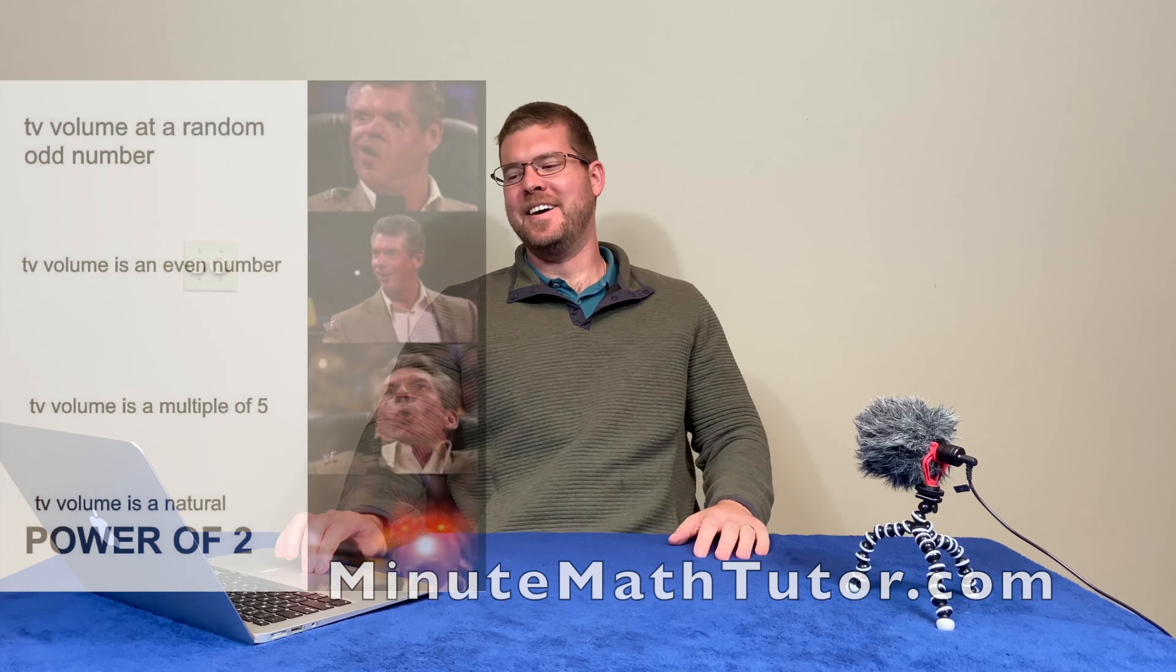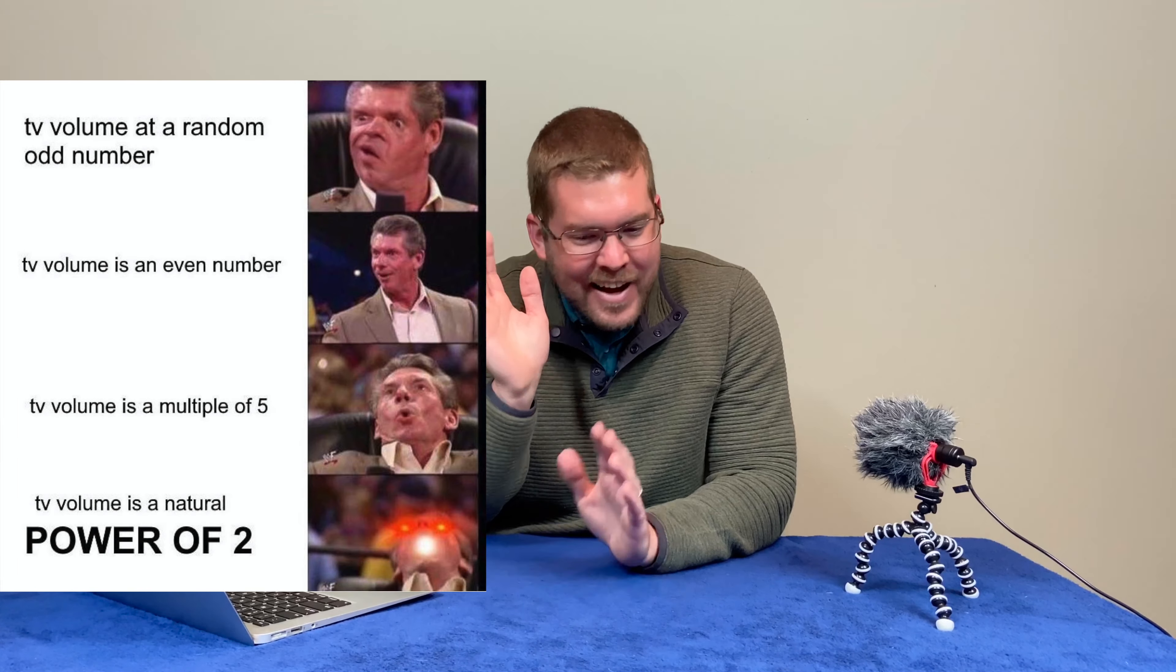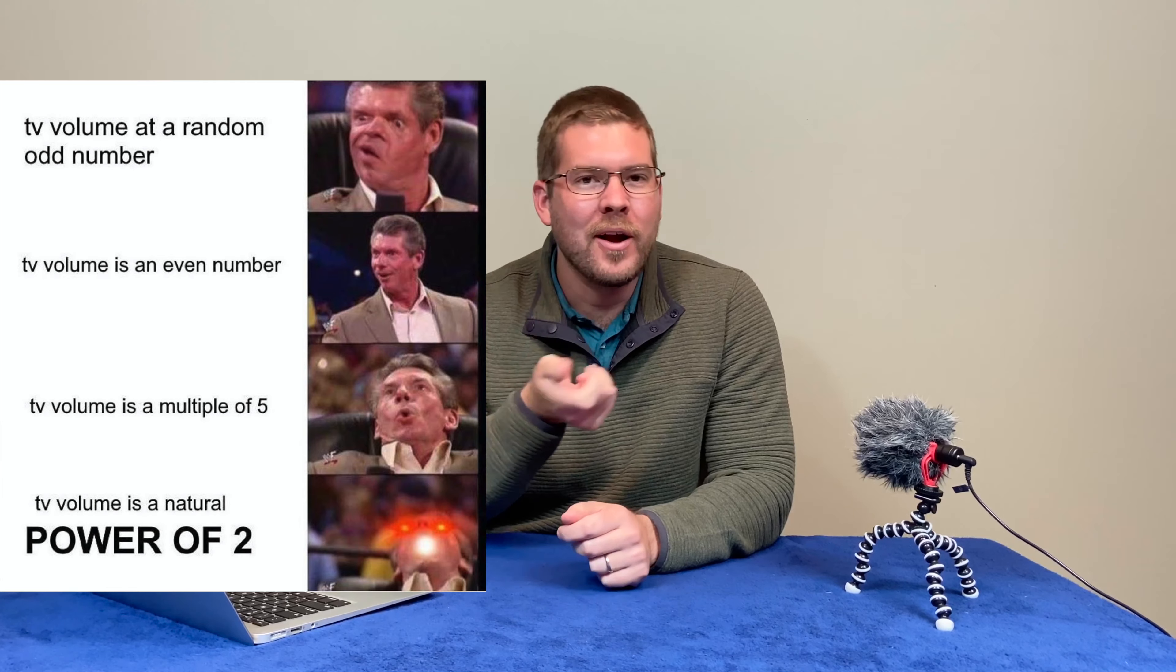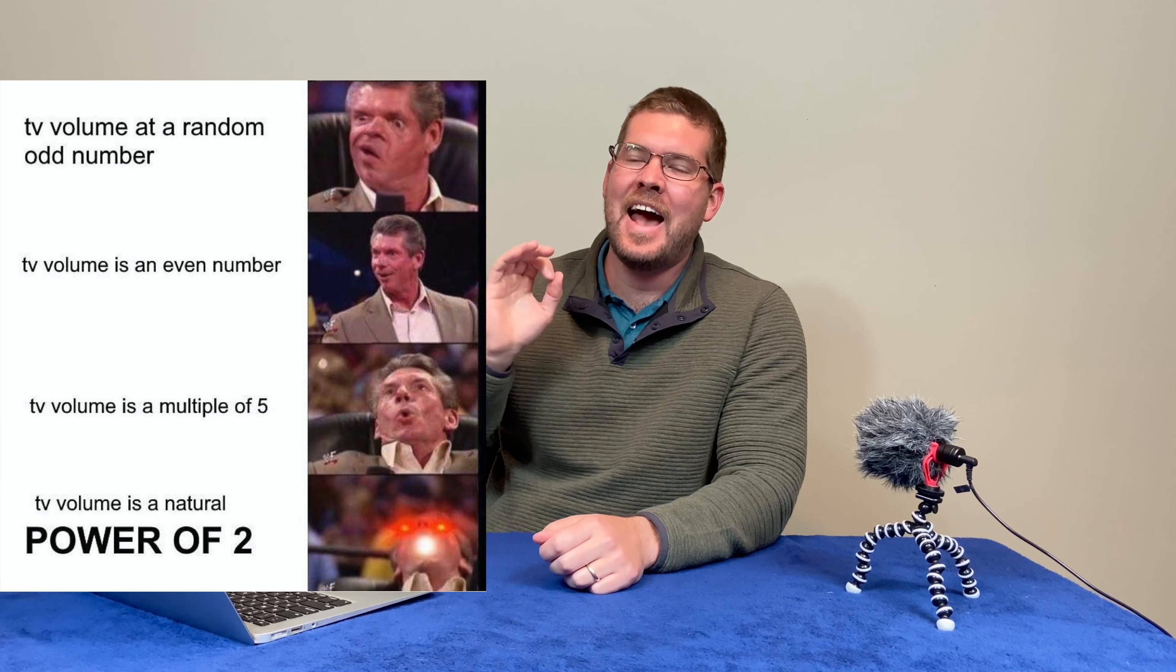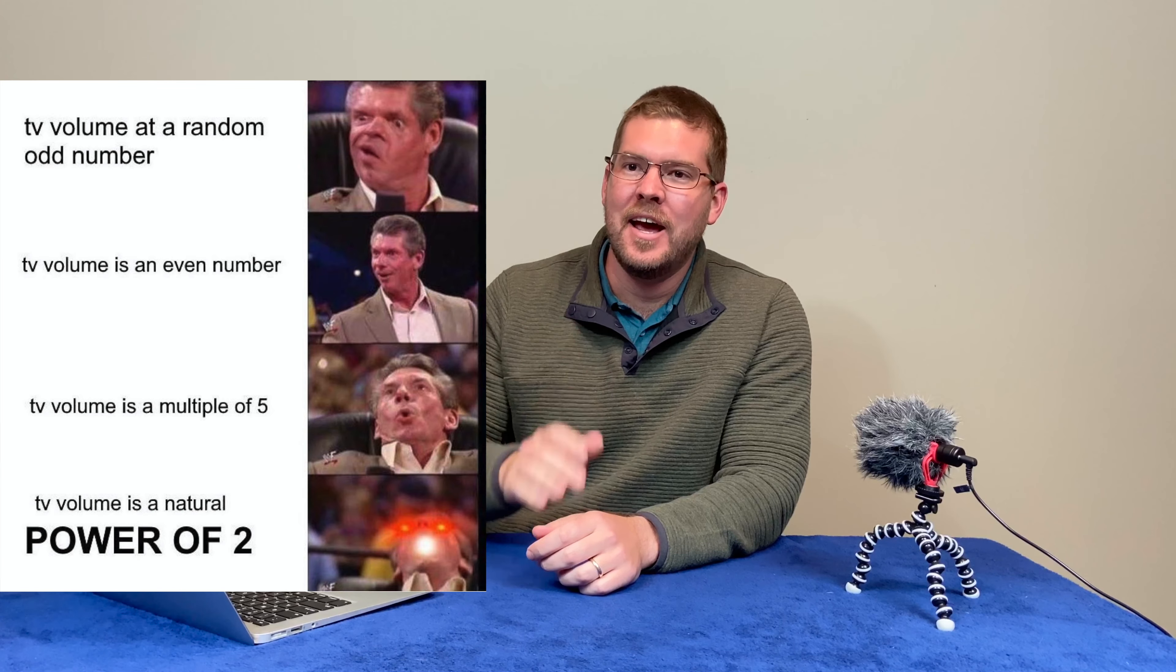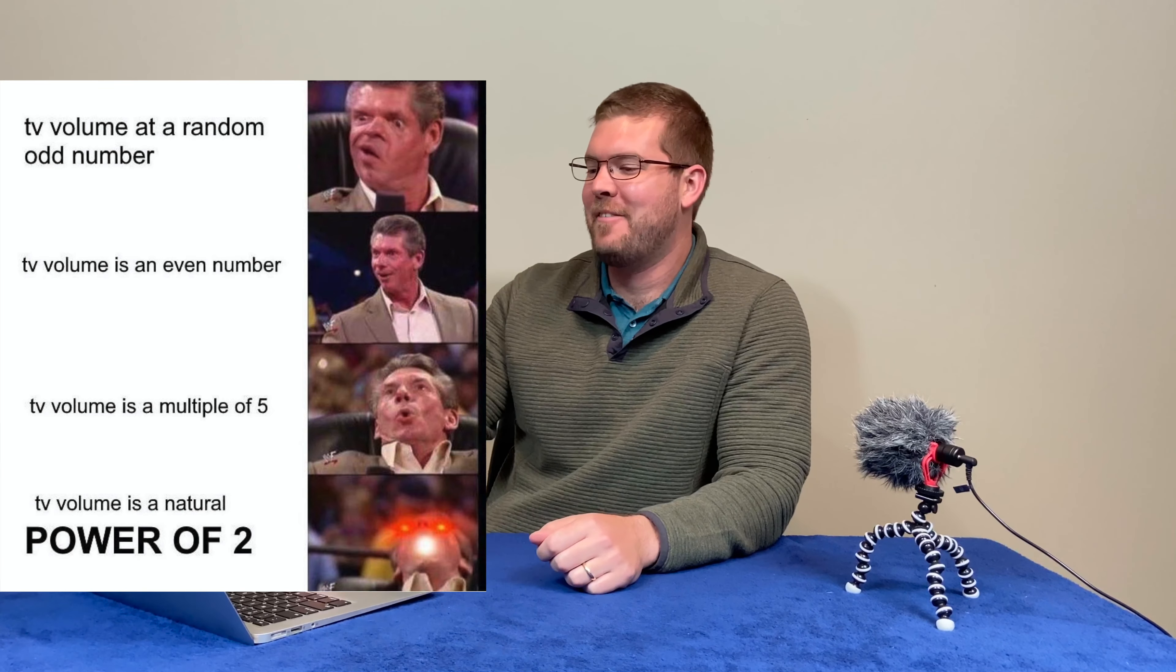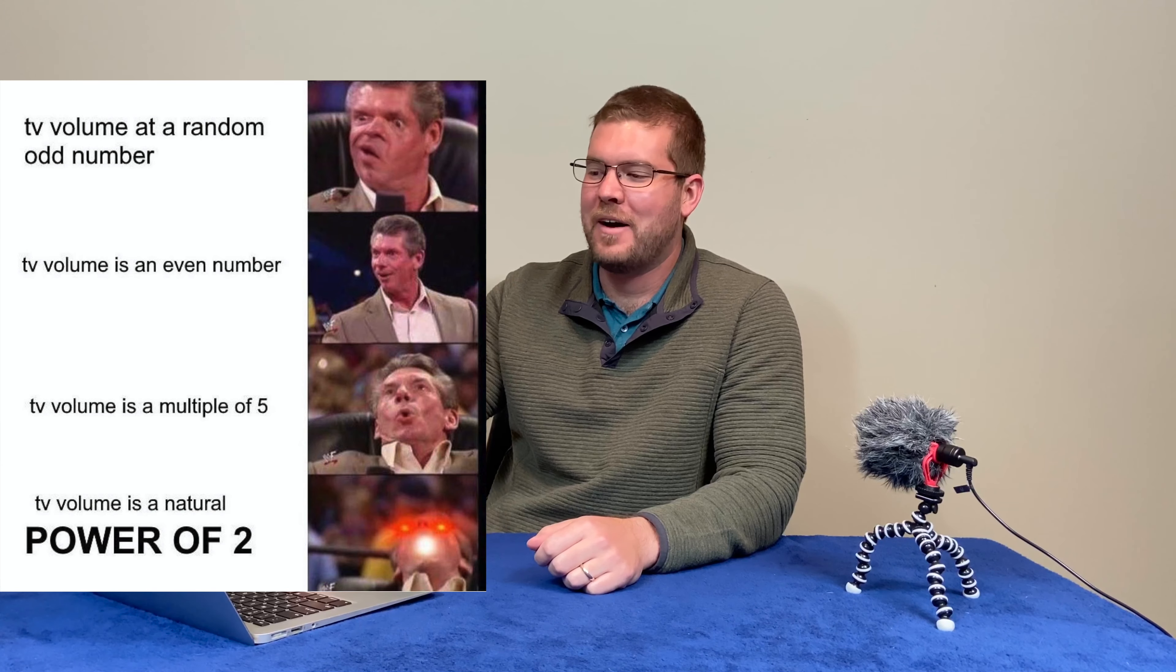Number 9, this one, it's weird. Anyone who knows math, likes math, has a certain thing. Growing up, the TV volume had to be, for me, fives, five or zeros. And then if I had to go without that, I had to go by twos if it was too loud or too quiet, but it was always by five.